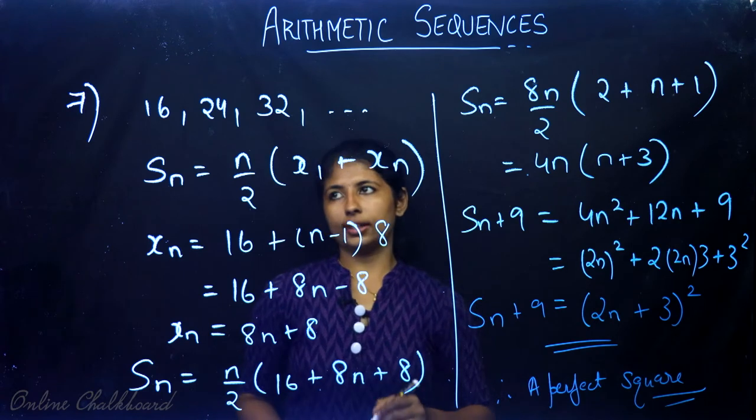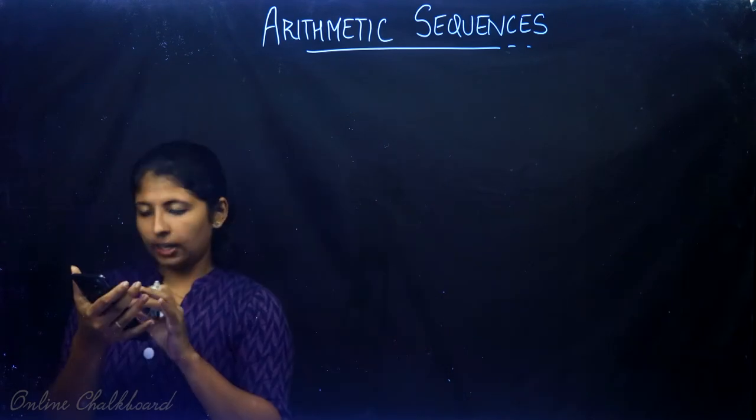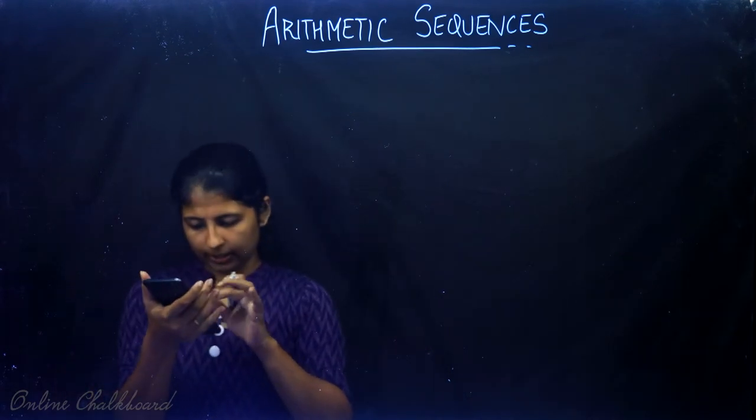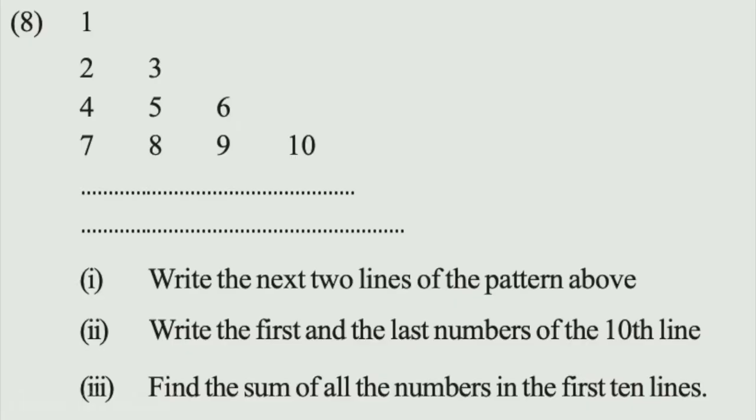This completes question number 7. The next question is on page number 36, where we are given the numbers 1, 2, 3, 4, 5, 6, 7, 8, 9, 10 arranged in lines, and we are talking about terms in the next two lines.